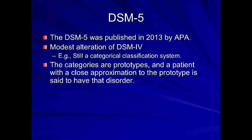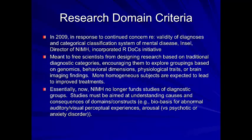What we have now is the DSM-5, published in 2013 by the APA. It's been somewhat controversial and slow to break ground, but it's what we're using now. It's a moderate alteration of the DSM-4, still a categorical classification system. It was supposed to be more revolutionary — they were talking about moving to a continuum approach — but ultimately that's not what came to be. They used the categories as prototypes, and patients with close approximations to those prototypes would be considered to have that diagnosis.